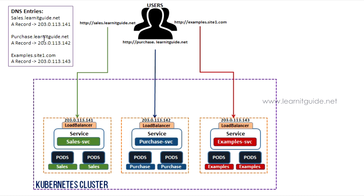After exposing the applications, you add them to DNS for name resolution using A records or CNAME records. If you have multiple domains — for example, sales.lanetk.net, purchase.lanetk.net, and examples.site1.com — all pointing to your single Kubernetes cluster, you end up with multiple entry points.